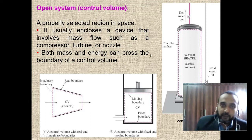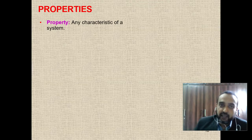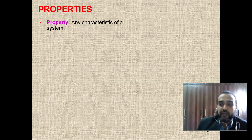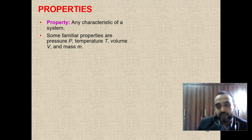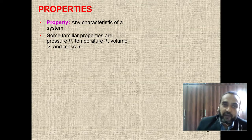Whenever we define a system, we check properties within it. A property is any characteristic of the system. During inspection you check the properties of the system. Some familiar properties are pressure, temperature, volume, and mass.